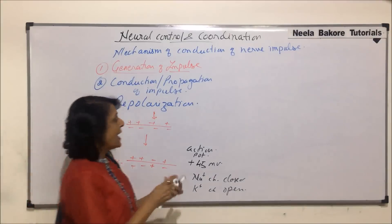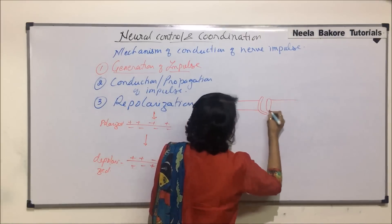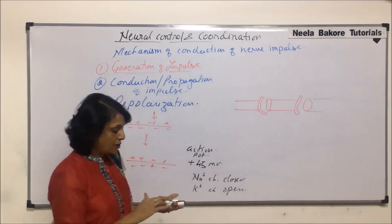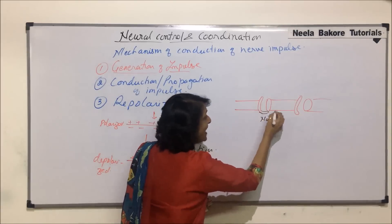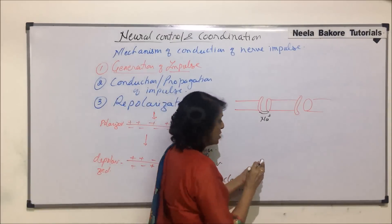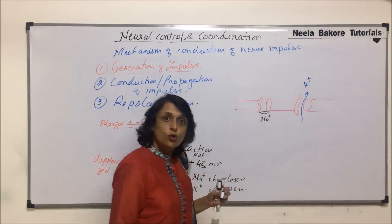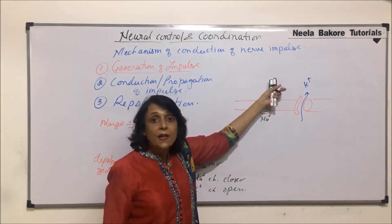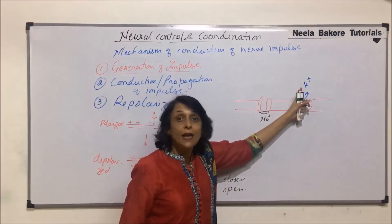At this time, action potential is generated at plus 45 millivolts. As soon as this action potential is generated, sodium channels close and potassium channels open. At this action potential, the sodium channel closes and all those sodium ions which came in during depolarization remain inside. Only potassium channels are open, so the potassium ions move out. The outside gets more and more positively charged ions and it becomes electropositive.